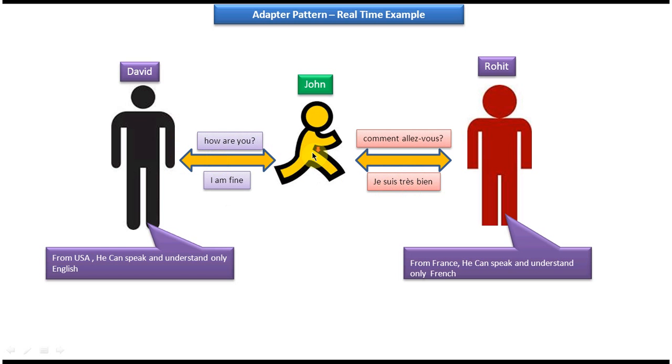So basically this John acts as an adapter or translator. And this is the best example of adapter design pattern.